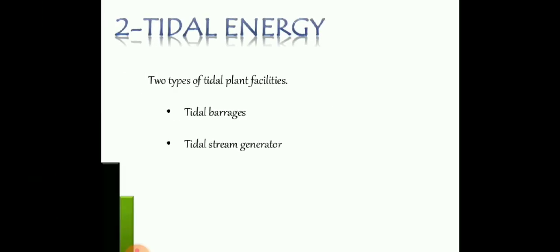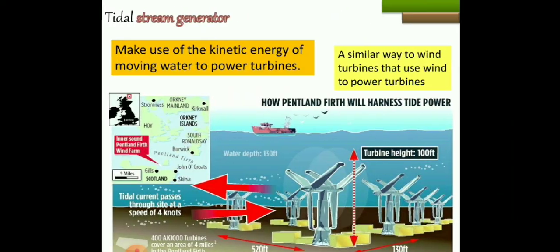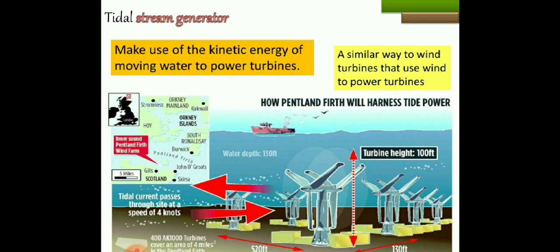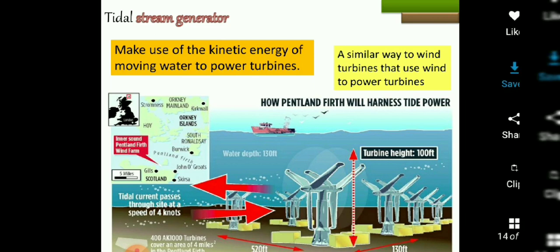The second type of tidal energy system is tidal stream generators. These are similar to wind turbines but constructed underwater in the ocean. They make use of the kinetic energy of moving water to power a turbine, and kinetic energy is converted to electrical energy.